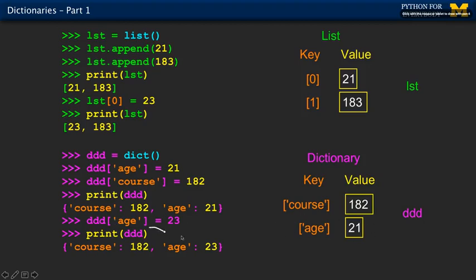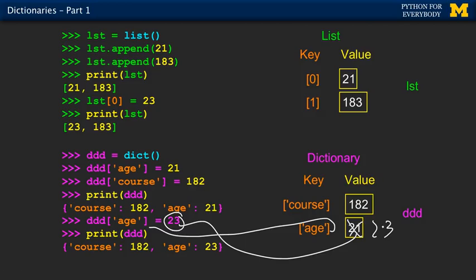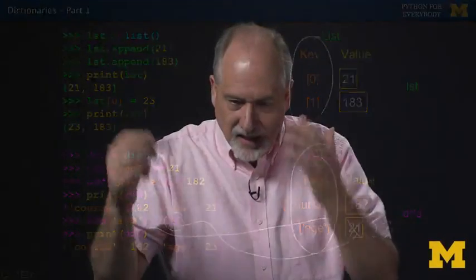They're very similar structures. The key difference, the significant difference is that the key mechanism, the way we look up an entry inside the collection, is different between them.